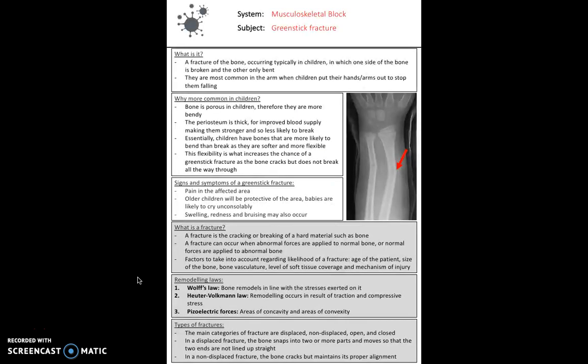Let's start with greenstick fractures. A greenstick fracture is a fracture of the bone occurring typically in children, where one side of the bone is broken and the other side is bent. This is a result of the type of bone present in children. In children the bone is porous and therefore more bendy. There's a thick periosteum which means improved blood supply, making them less likely to break and stronger. These most commonly occur in children when they fall and put their arms and hands out to stop them falling.